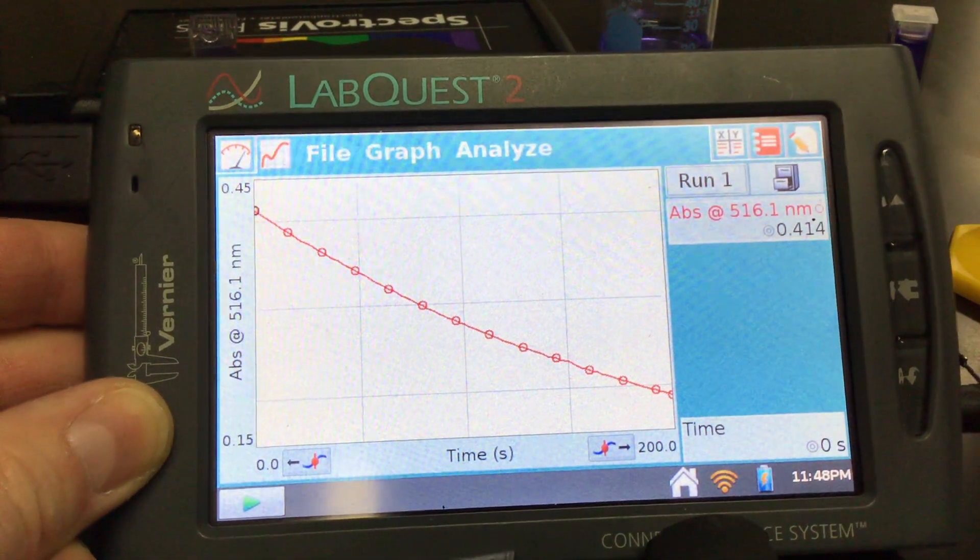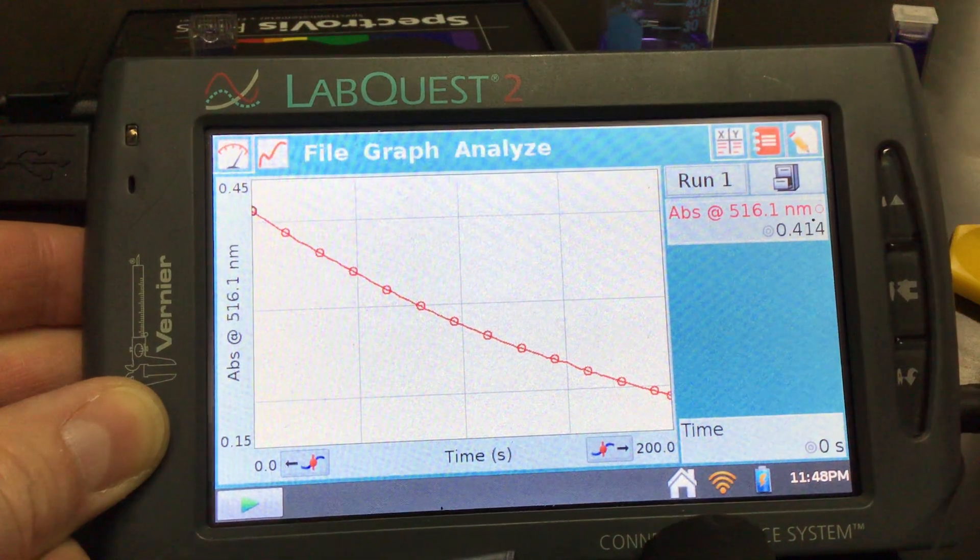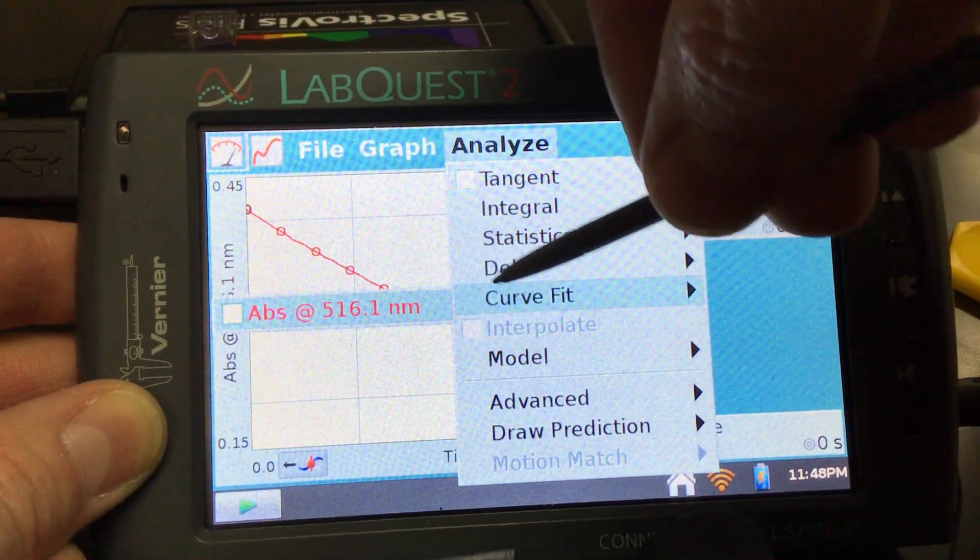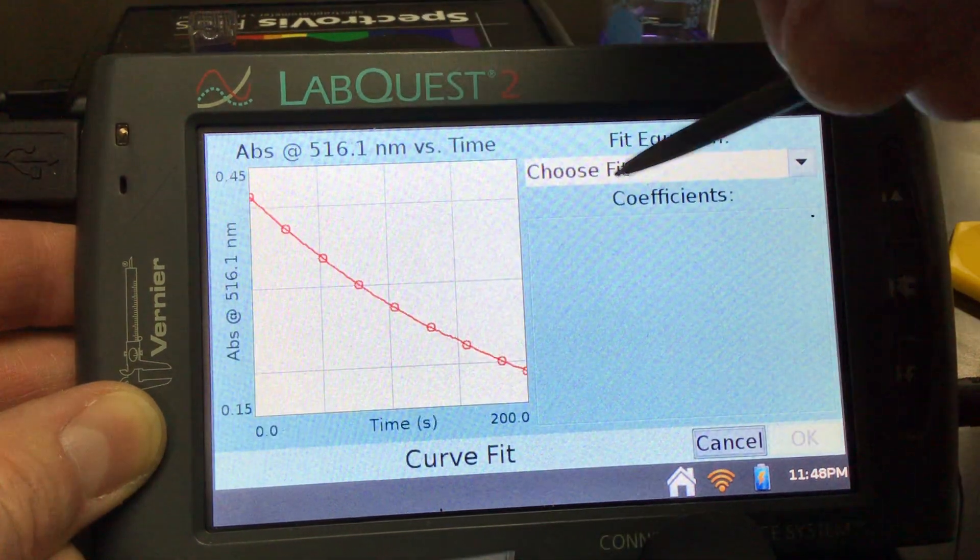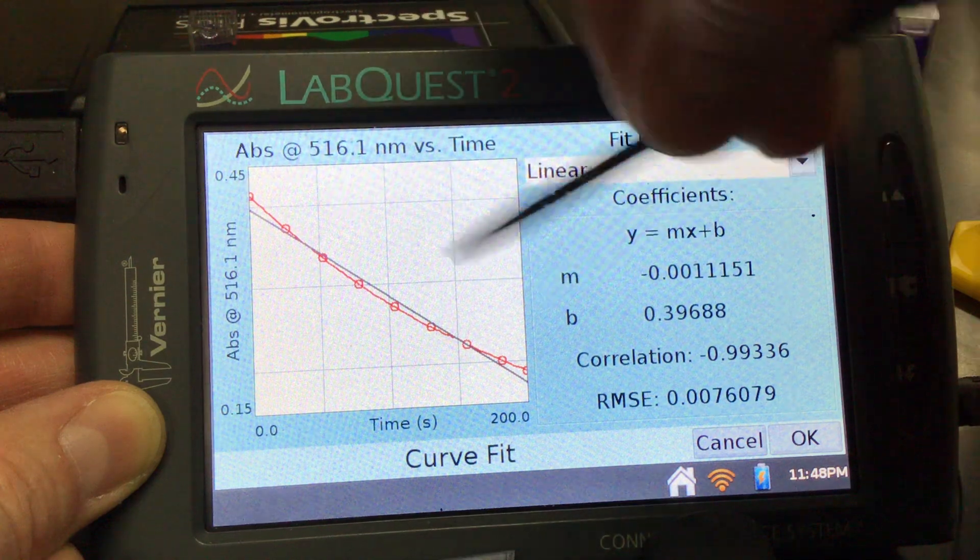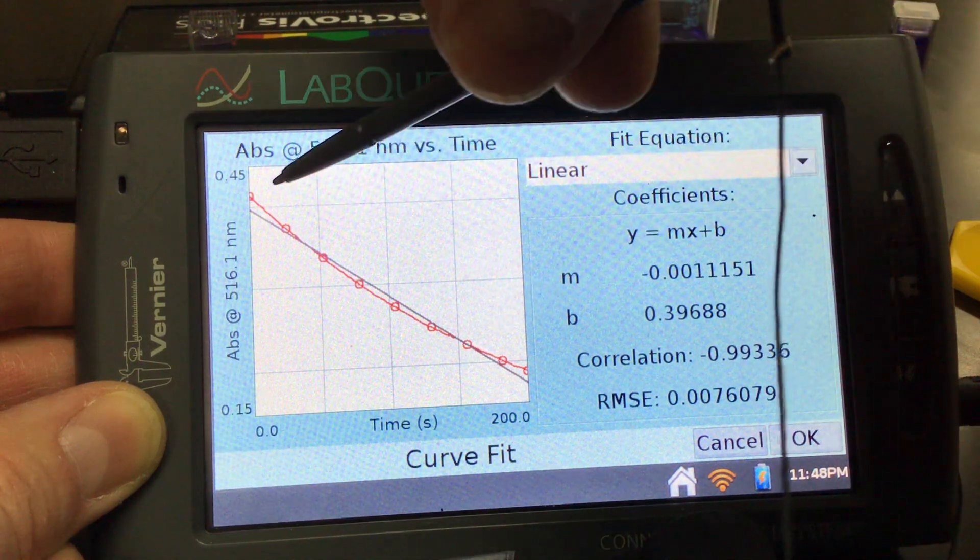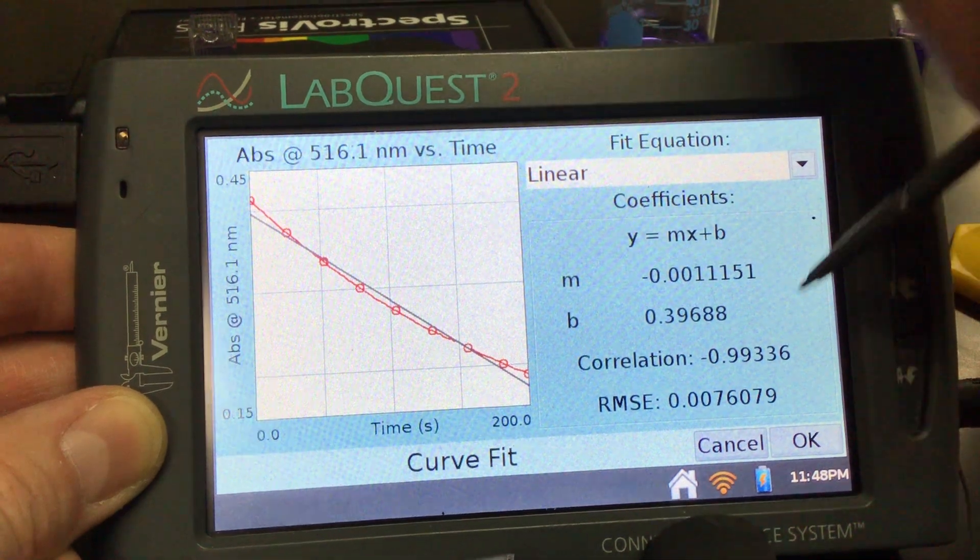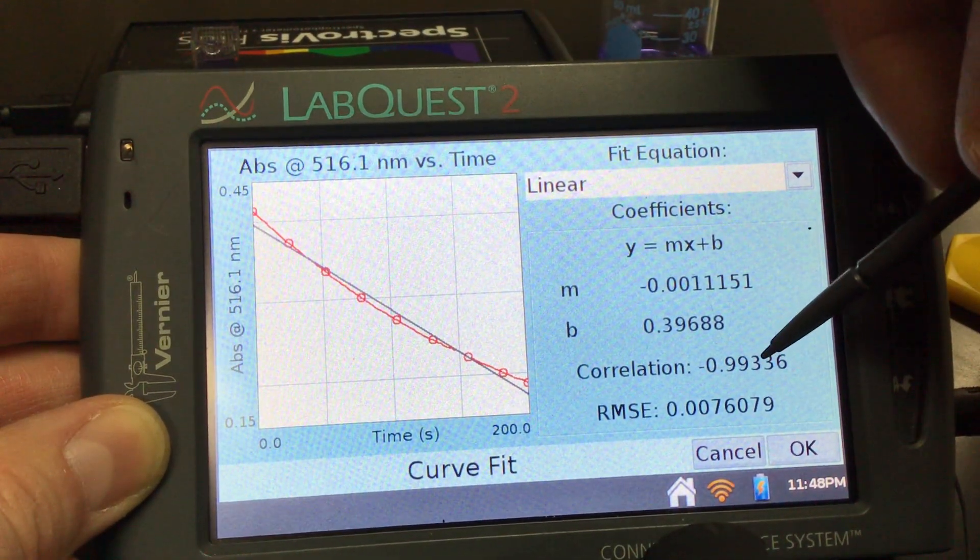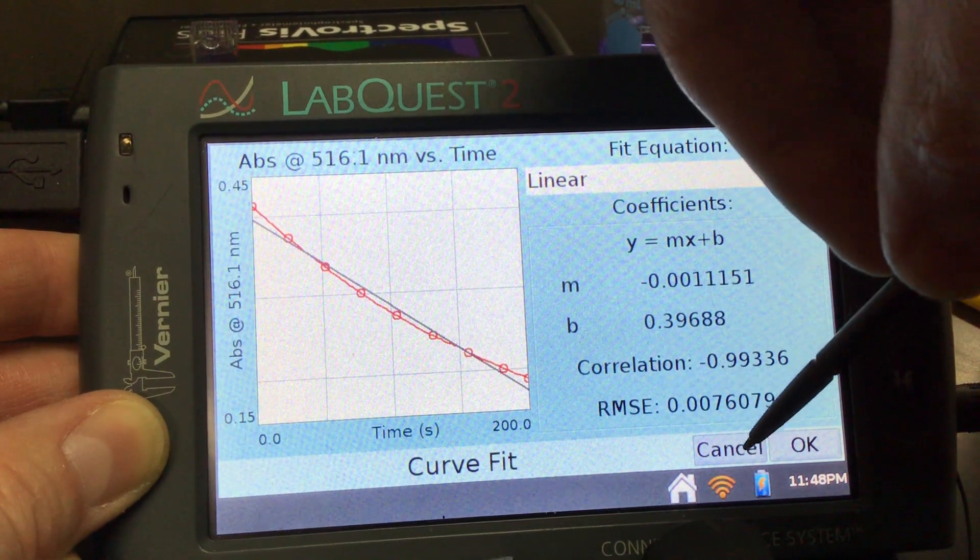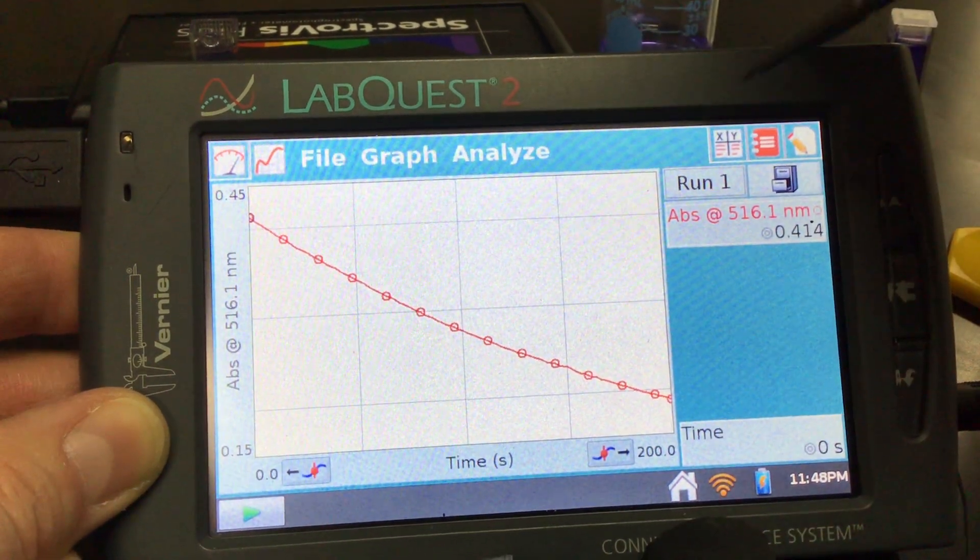We could always test that. We could analyze it and look at... if we go under analyze, curve fit, and select the absorbance and choose a linear fit, you can tell really that the line doesn't match the curve of our data. Our correlation is decent but it's not great. Let's go ahead and cancel that. I don't think that's the relationship.